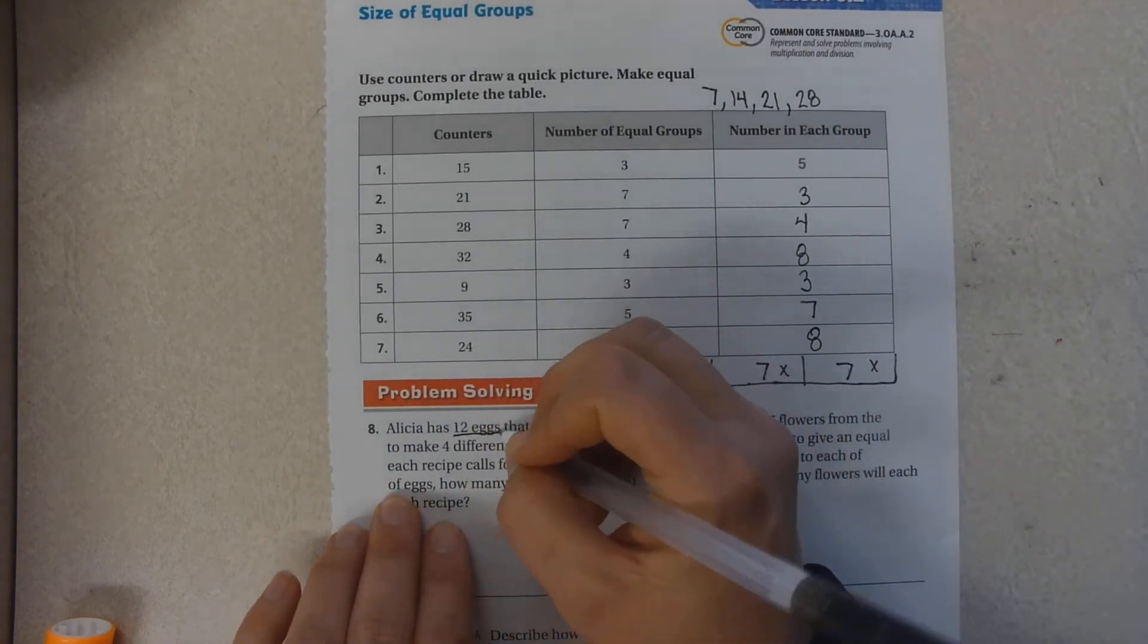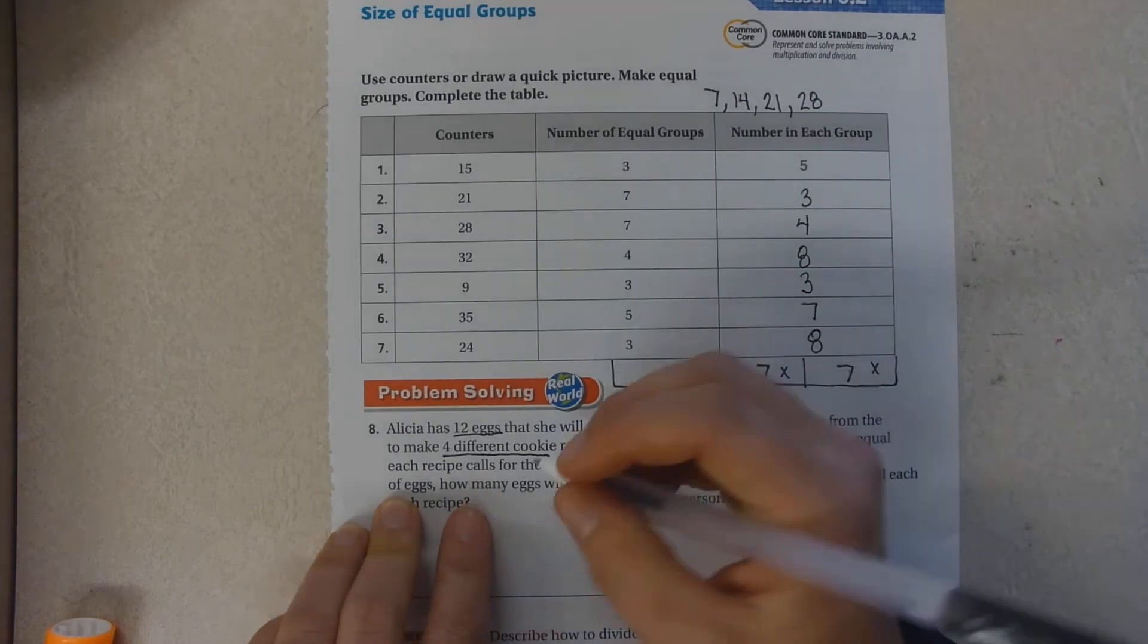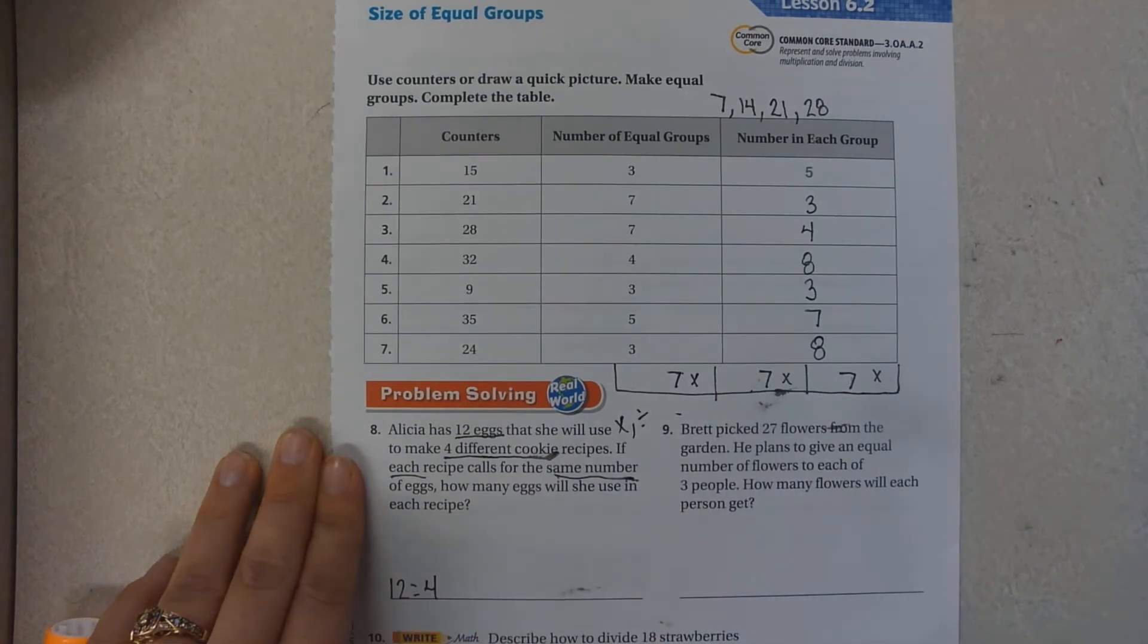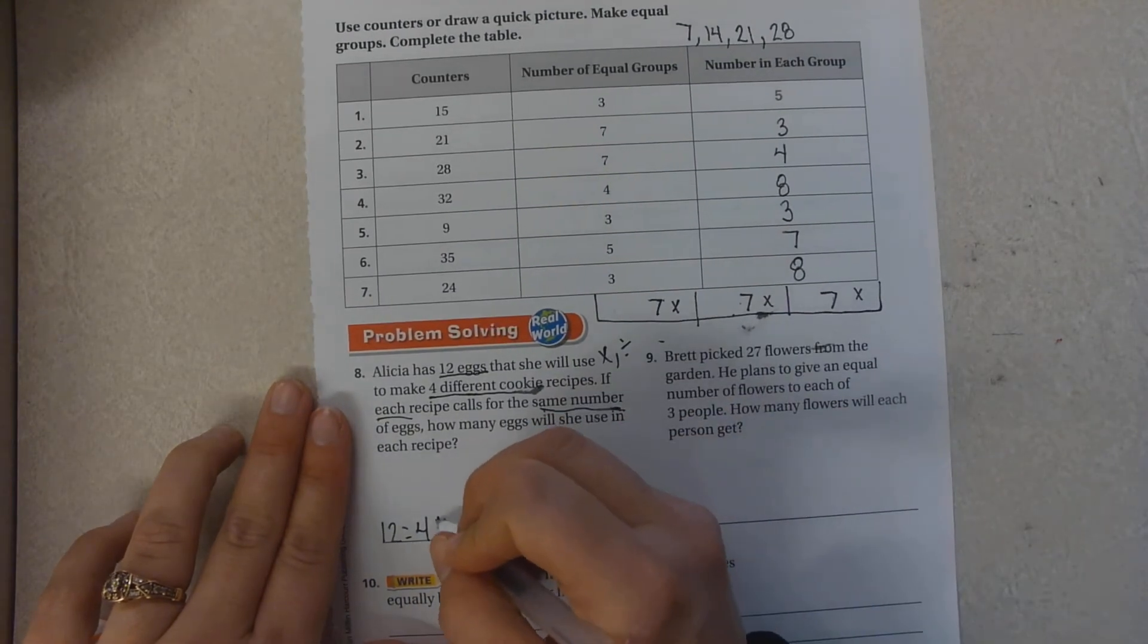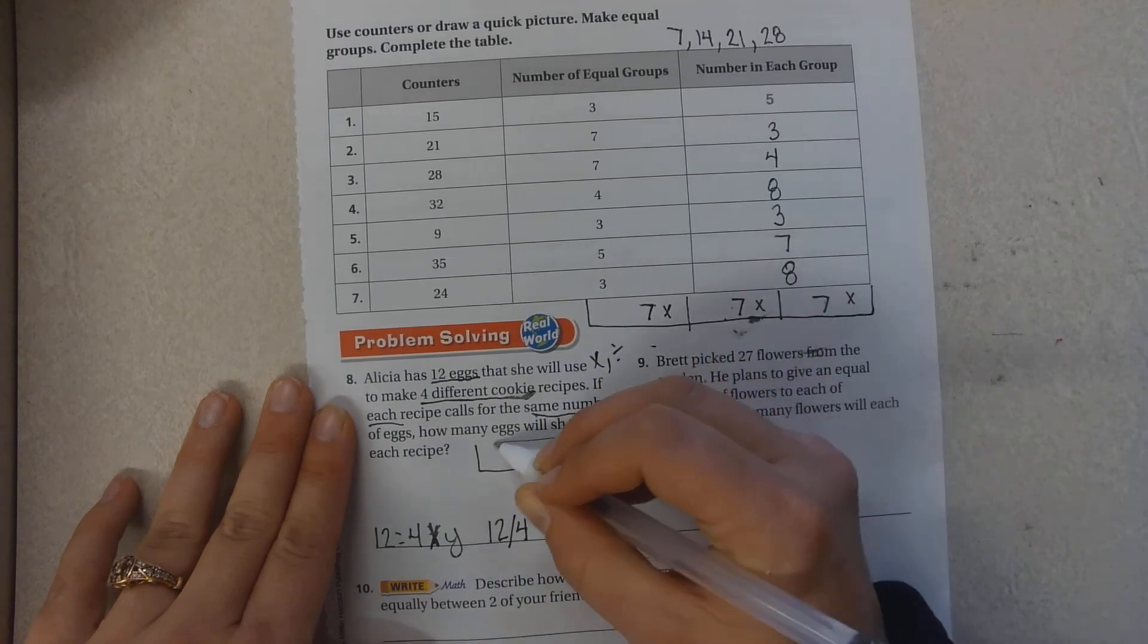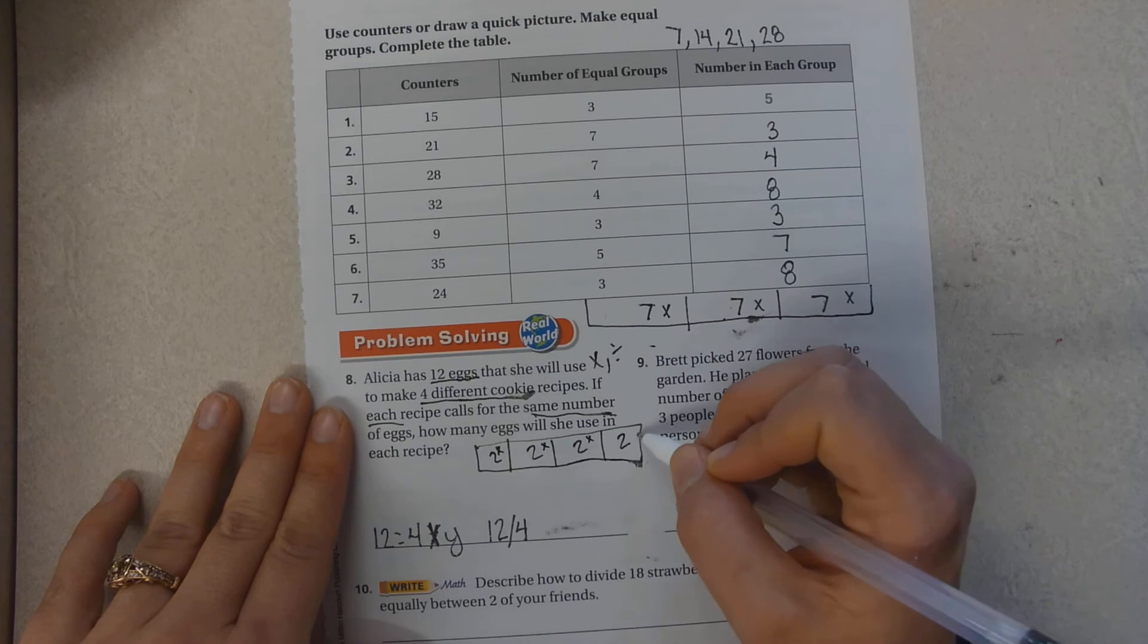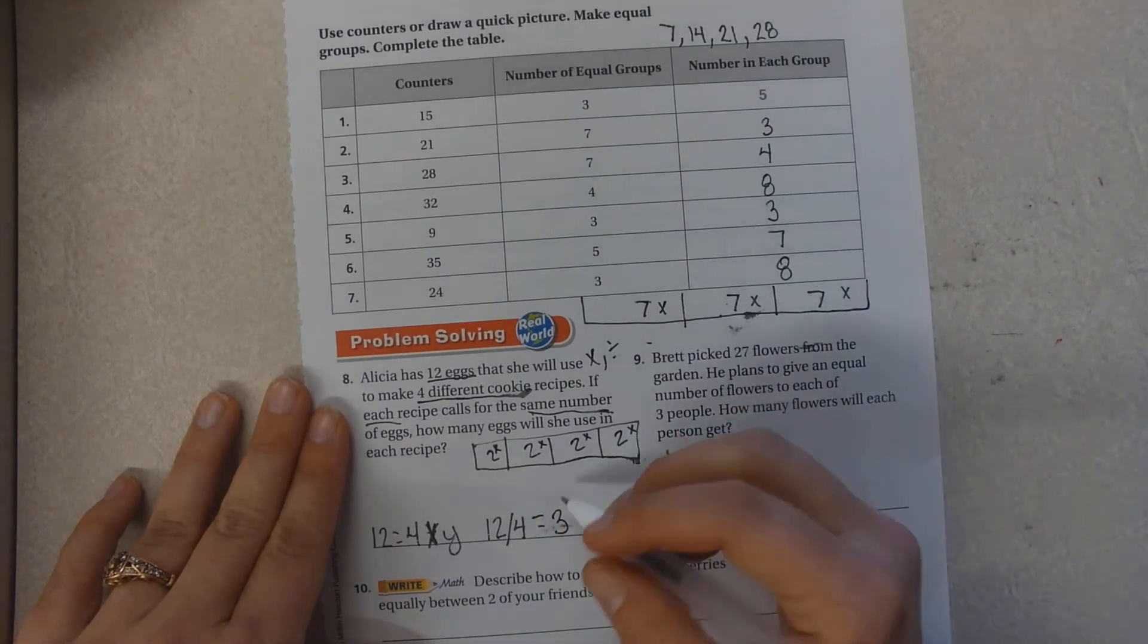Alicia has 12 eggs that she will use to make 4 different cookie recipes. If each recipe calls for the same number of eggs. You see this word each and same number. That tells you you're going to multiply or divide. So you have the total of 12. You've got 4 different cookie recipes. How many eggs will you need? And they're equal. So what do we do? You're going to divide 12 divided by 4. How many times does 4 go into 12? Draw a picture, cut it into 4s, and then you skip count. 2, 4, 6, 8, 9, 10, 11, 12. So how much is in each of these? 3. 3 eggs.